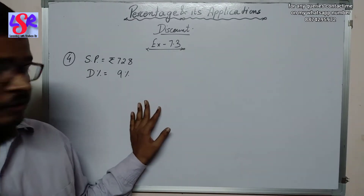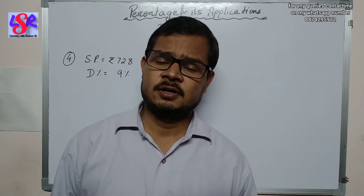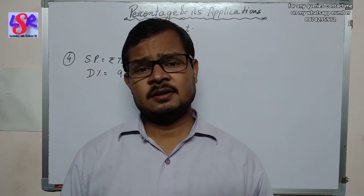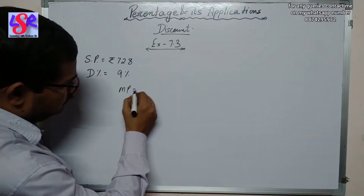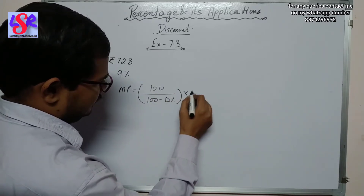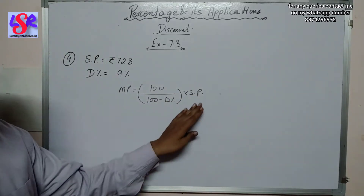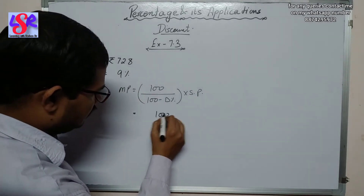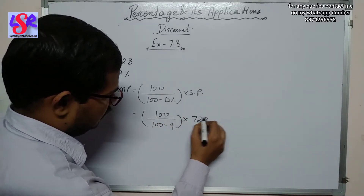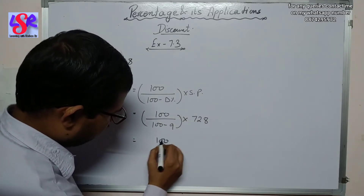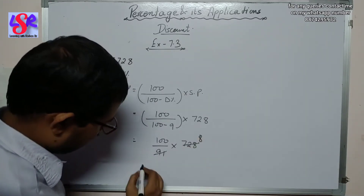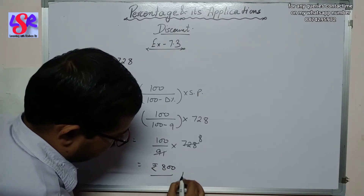This is a direct question in which SP and discount percent are given, and we have to find the mark price using the direct formula. When we are given the selling price and discount percent, the formula is: Mark Price = 100 / (100 − discount%) × SP. Placing the values: 100 / (100 − 9) × 728 = 100 / 91 × 728. Solving this gives rupees 800 as the answer.